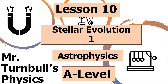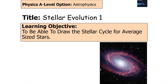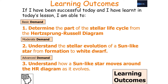Hello and welcome to today's lesson on Stellar Evolution, which is part of the astrophysics topic in AQA A Level Physics. In today's lesson we're going to look at how to draw a life cycle for an average sized star. If we've been successful, we should be able to determine the part of the stellar life cycle from the Hertzsprung-Russell diagram, understand the stellar evolution of a Sun-like star from formation to white dwarf, and understand how a Sun-like star moves around the HR diagram as it evolves.